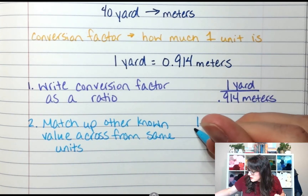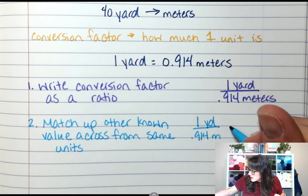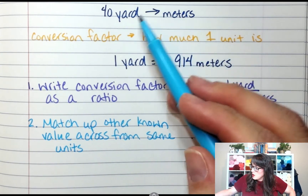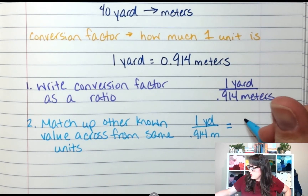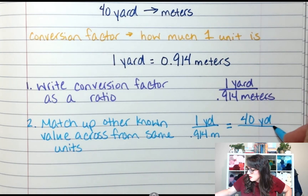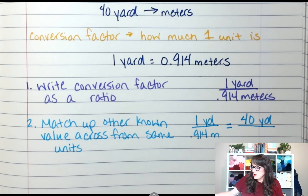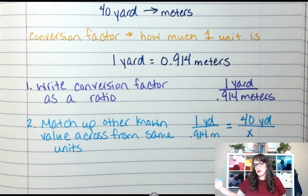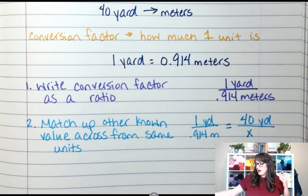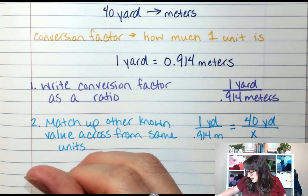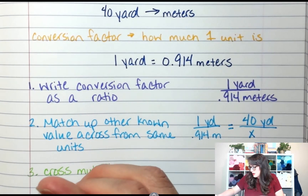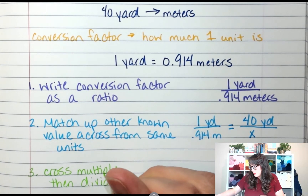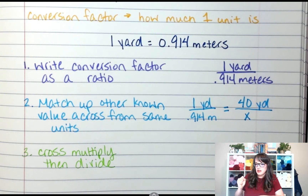So in this instance I have yards and yards, so those need to go across from each other. I have one yard over 0.914 meters, equal to — it's a proportion — 40 yards. Is yards on top or on bottom? Yards on top. So I put 40 yards on top and X on the bottom as a placeholder variable. Now we have a proportion, and step three is to cross multiply, then divide.